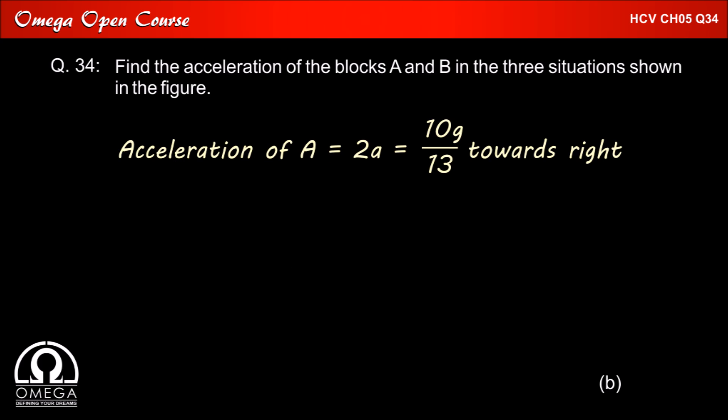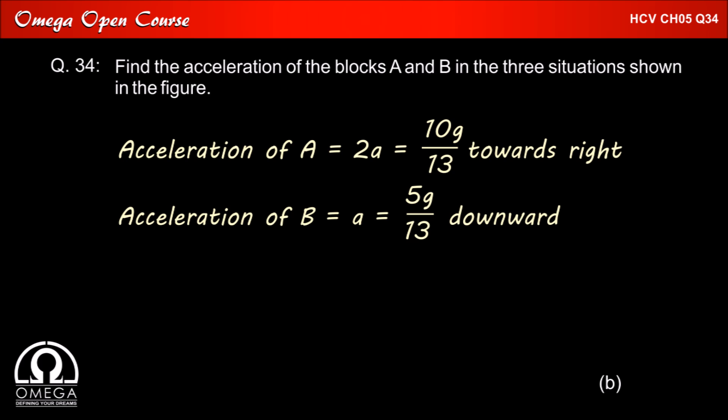Thus, the acceleration of block A is 2A, that is 10g/13 towards the right, while that of block B is A, that is 5g/13 in the downward direction.